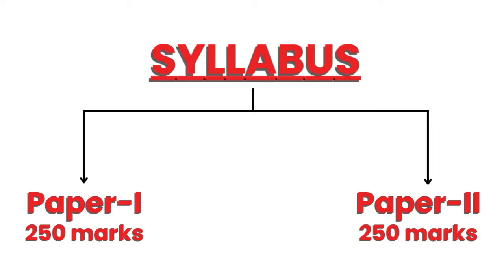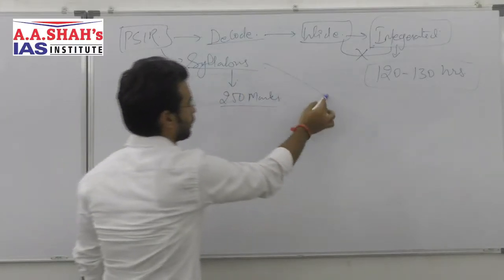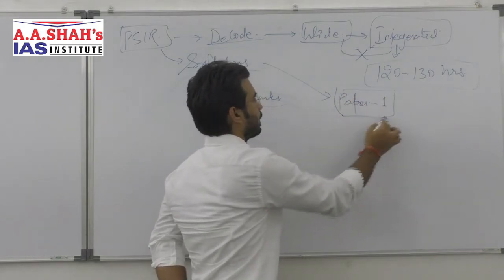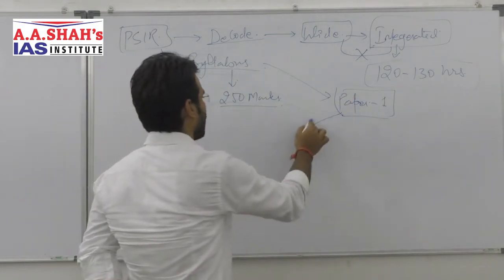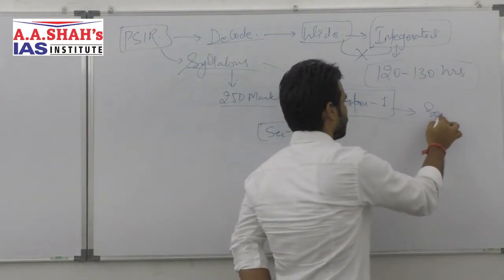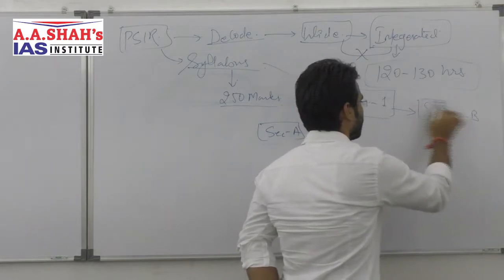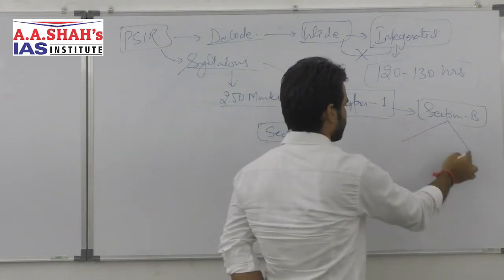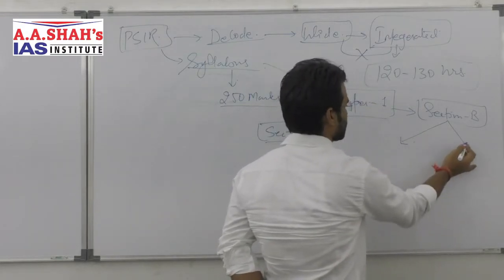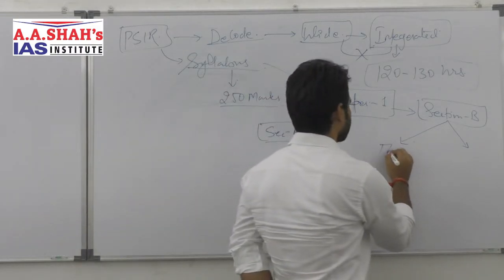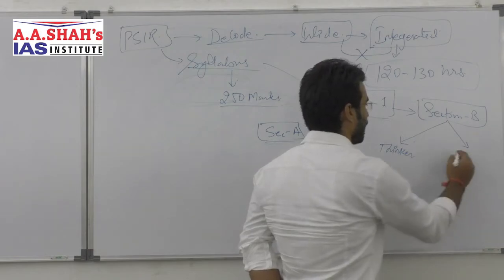There are two papers, each carrying 250 marks. In Paper 1, the syllabus is divided into two parts: Section A and Section B. Section A — whose name is Political Theory — can itself be divided into two parts as per the syllabus: one is Thinkers, and the other is Theory.